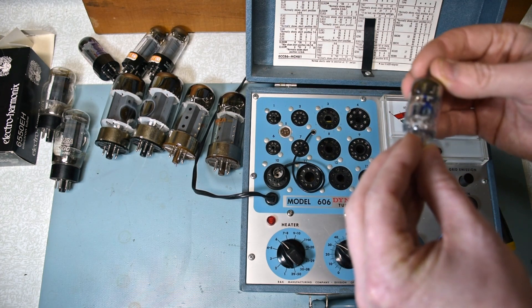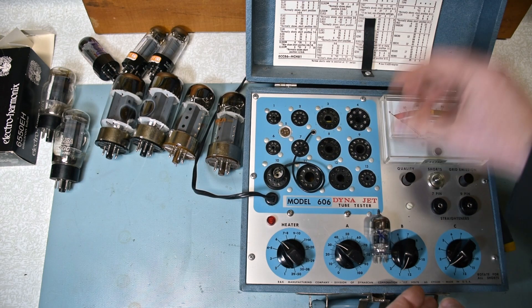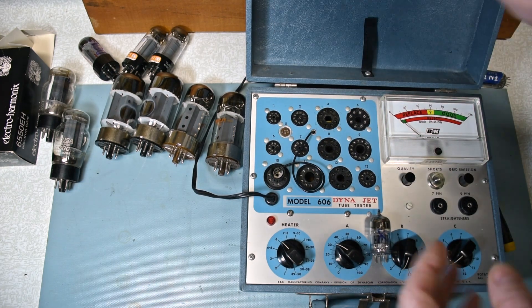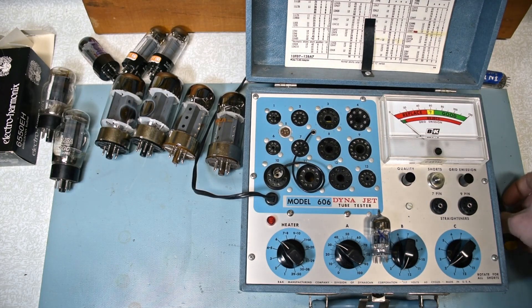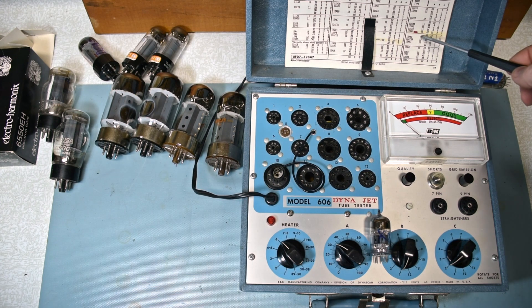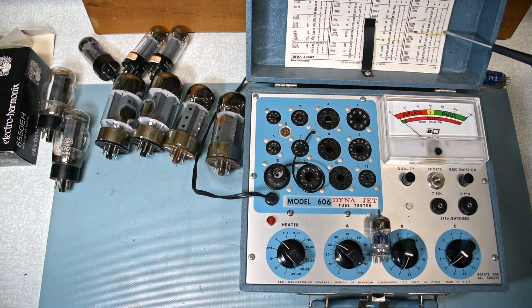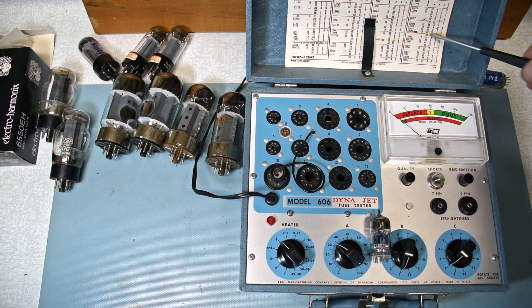Next one here, 12AX7. Looks like a Sovtek. I have this one marked out too. Now this is a preamp tube. It's got two sections to the tube that are identical. So there's an extra row of information here. So one's for one half and one's for the other half.